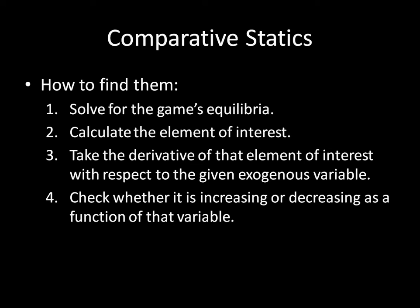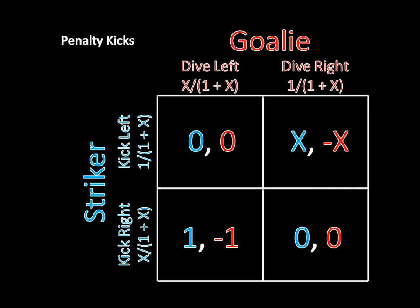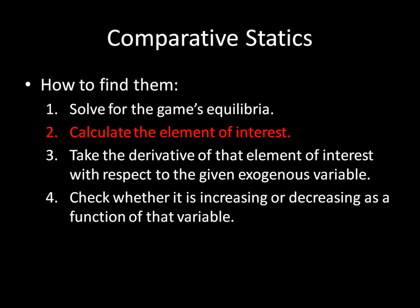Let's start working through this process of comparative statics. The first thing to do is solve for the game's equilibria — I conveniently did this in the last video. We've already found the mixed strategy Nash equilibrium of this penalty kicks game: the kicker aims to the left with probability 1 over 1 plus X, and to the right with complementary probability, while the goalie dives to the left with probability X over 1 plus X, and to the right with complementary probability. That part is already done.